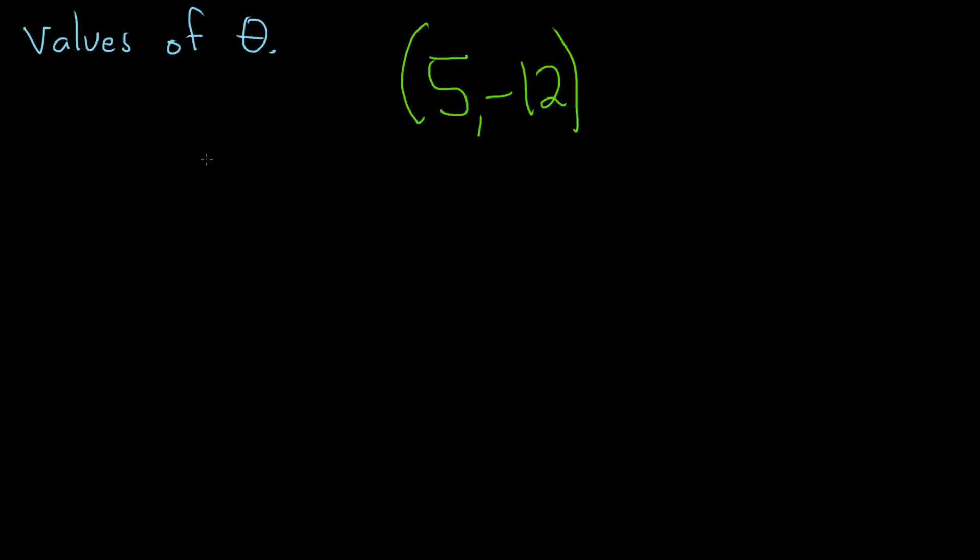So 5 negative 12, let's go ahead and figure out where that is. So that should be somewhere in quadrant 4 because if we go say 5 right and down 12, that will put us here. So here is our angle and this point here would be say 5 negative 12.